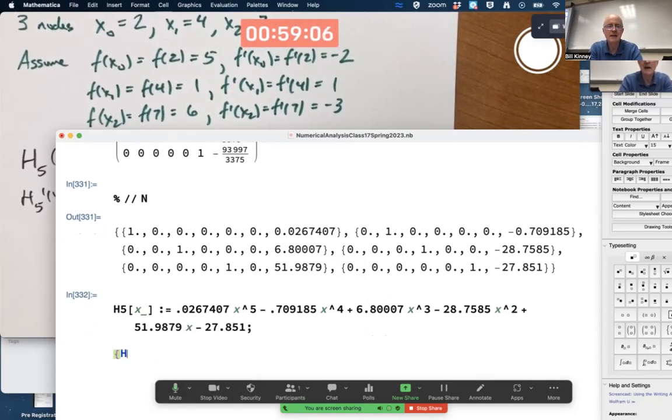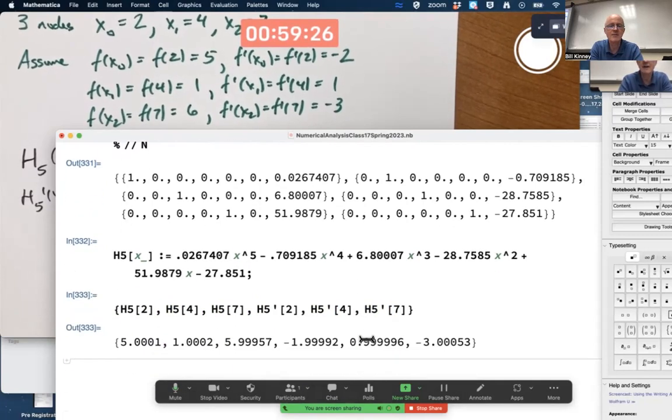Does this have the approximately right function values at 2, 4, and 7, and the right derivative values at those same nodes? I'm sure it's off a little bit because of rounding. But let's see how close they are. 2, 5, 1, 6, negative 2, 1, and negative 3. Not bad.